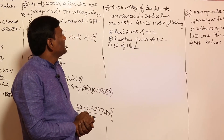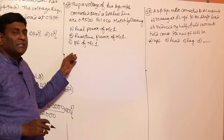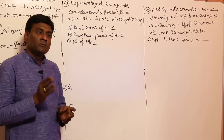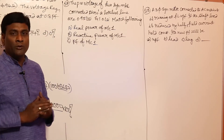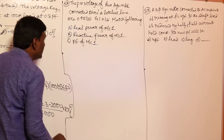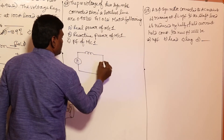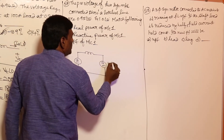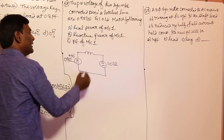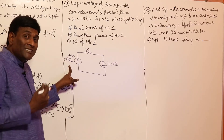Next question: the per-unit voltages of two synchronous machines connected through a lossless line are 0.95 and 1.0 — match the following. This question appeared in old GATE machines and old GATE power systems papers. Machine one is at 1.0 angle zero, machine two is at 0.95 angle plus 10 degrees, connected through a lossless reactance. Since machine two is leading, it sends active power — so real power of machine one is positive.